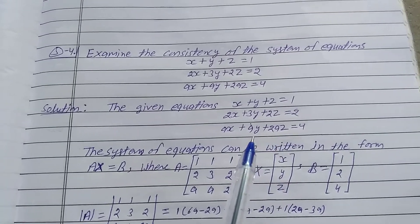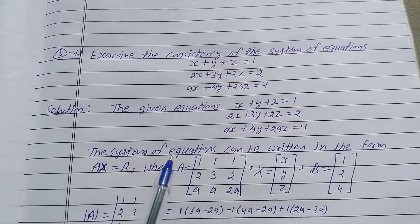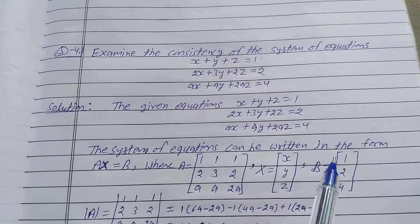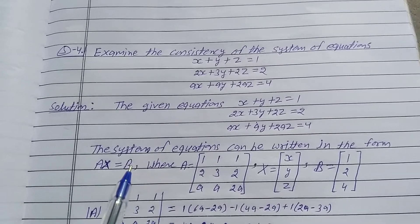The system of equations can be written in the form AX is equal to B.